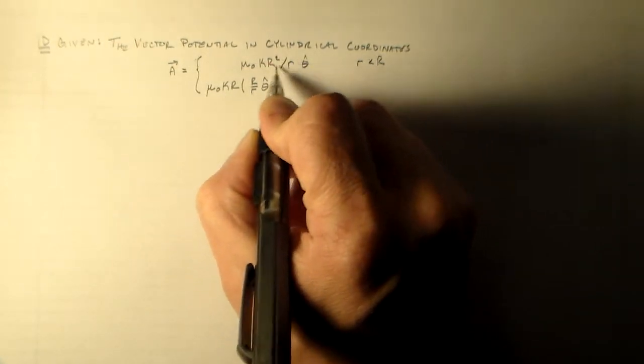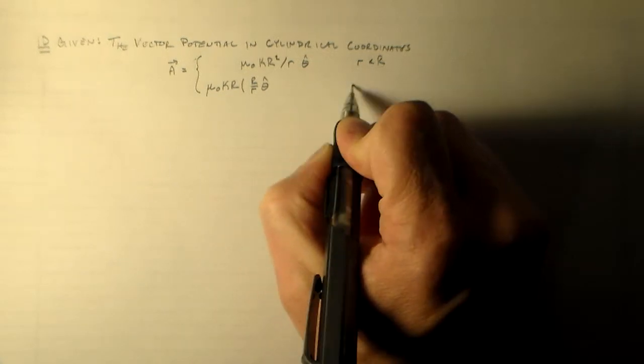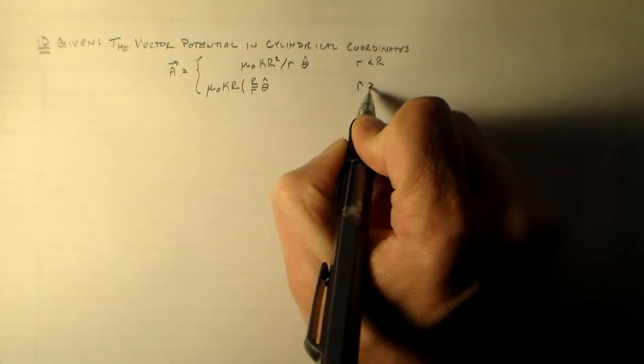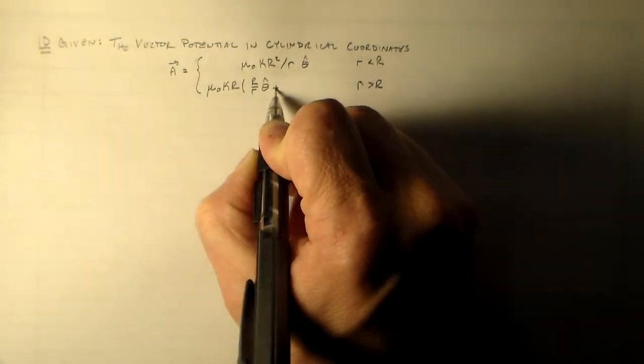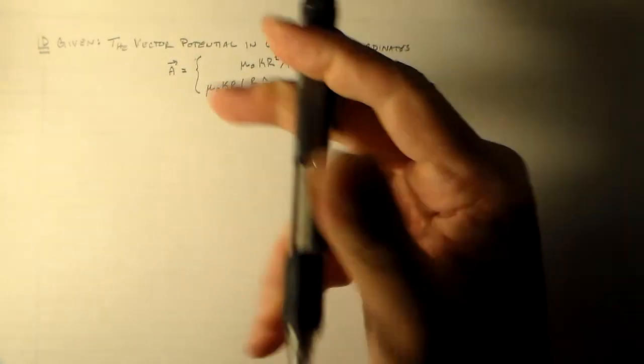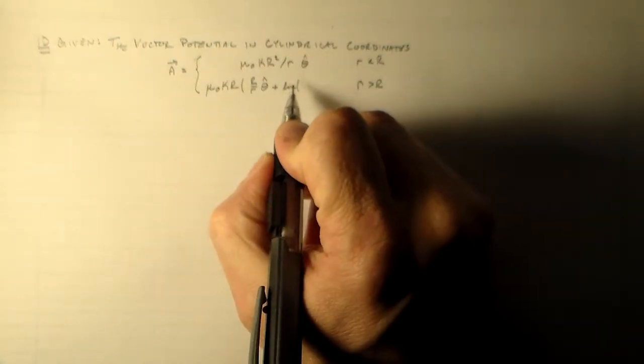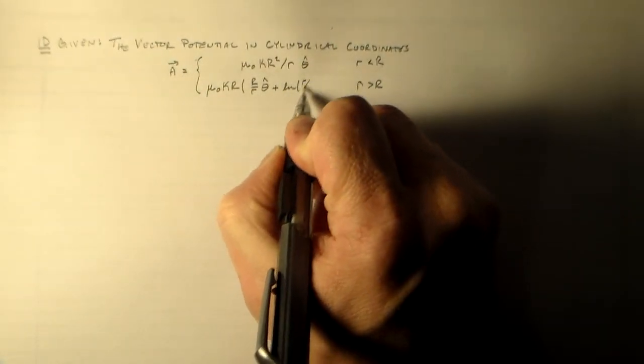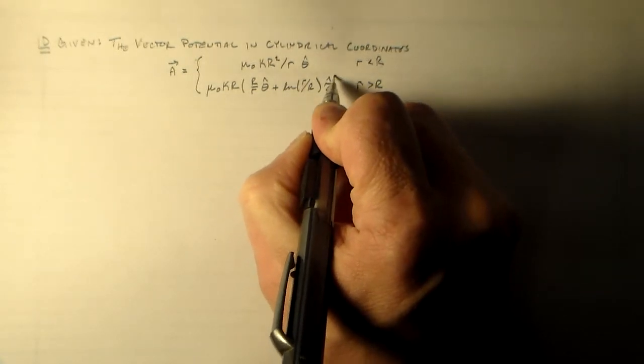So this is actually a continuation when R is greater than big R, plus the natural log of little r over big R in the z hat direction.